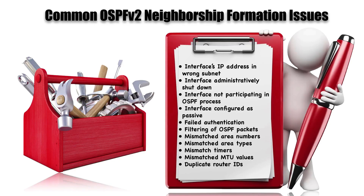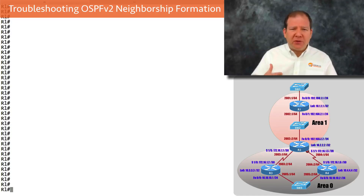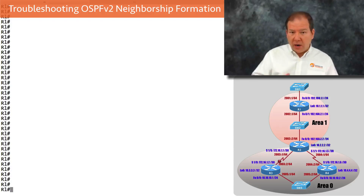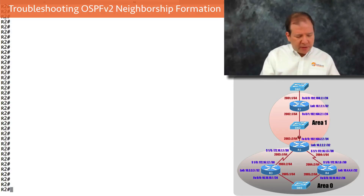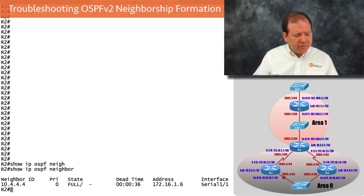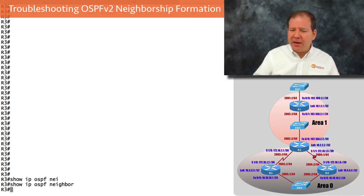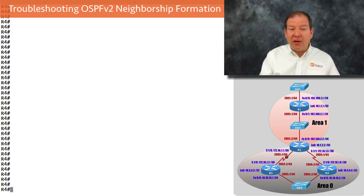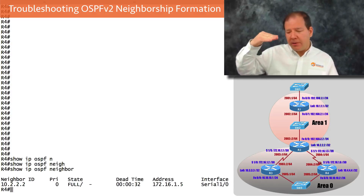With these troubleshooting targets in mind, let's go to a live topology and troubleshoot an OSPF version 2 scenario. We don't have neighborships between all adjacent routers. Starting on R1 with a 'show ip ospf neighbor' command — it has no neighbors. R2 has one neighbor: R4, but not R3 or R1. R3 has no neighbors. And as predicted, R4 is a neighbor only with R2. We've clearly got some issues to work through.